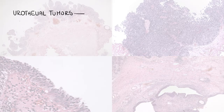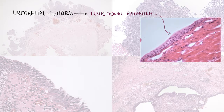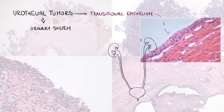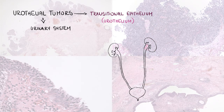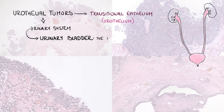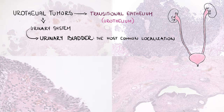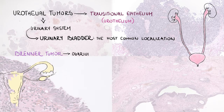Urothelial tumors represent a group of tumors differentiating towards the transitional epithelium. They can be found at any site of the urinary system that is normally covered by urothelium, from renal calyces to the urethra, with the urinary bladder being the most common localization of these neoplasms. Exceptionally, some other tumors in different localizations may show urothelial differentiation, for example Brenner tumor of the ovary.